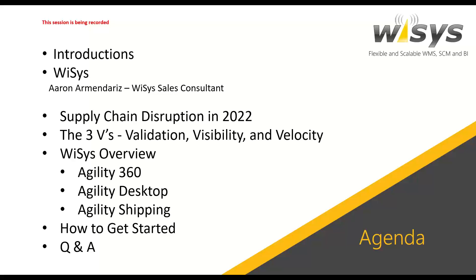Let's take a quick look at our agenda. We're going to do some background on supply chain disruptions in 2022. I have the three V's: validation, visibility, and velocity. We're going to go over an overview of the Wysis product during those three V's, including 360, our newest Android application, our Agility desktop license, handheld devices, and our newest product, Agility Shipping. We're also going to talk about how you can get started with Wysis and how we can help you during these times of disruption. Then we'll take some questions and answers at the end.